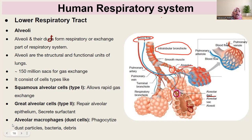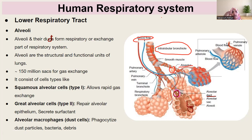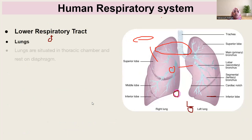The third type is alveolar macrophages, also known as dust cells. These act as immune cells — they are phagocytic in nature and trap dust particles, bacteria, or any microorganisms that might cause infection of the respiratory tract. Alveolar macrophages carry out immune functions, checking for bacteria, debris, and dust particles through phagocytosis.